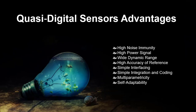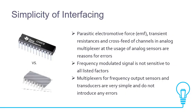Quasi-digital sensor advantages: high noise immunity, high power signal, very dynamic ranges, high accuracy of reference, simple interfacing, simple integration and coding, multiparametricity, and self-adaptability. Parasitic electromotive forces (EMF), transient resistance, and cross-feed-off channels in analog multiplexers when using analog sensors are reasons for errors. Frequency-modulated signals are not sensitive to all these listed factors. Multiplexers for frequency output sensors and transducers are very simple and do not introduce any errors.